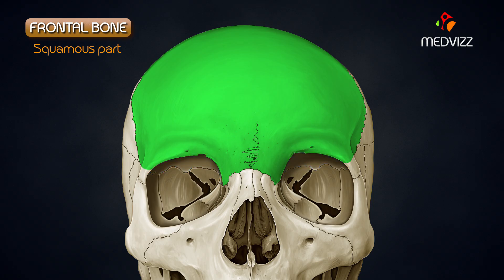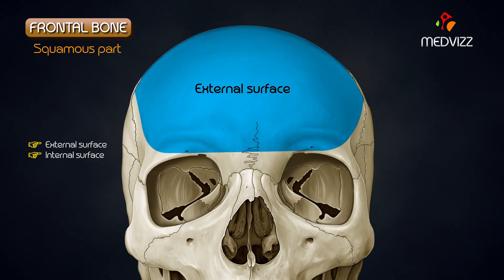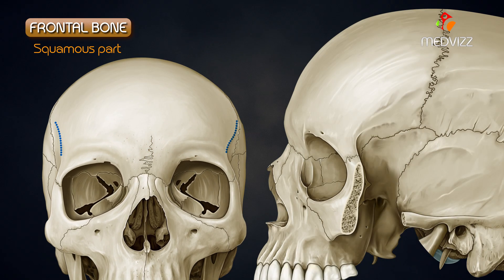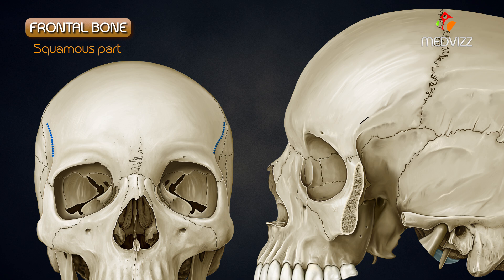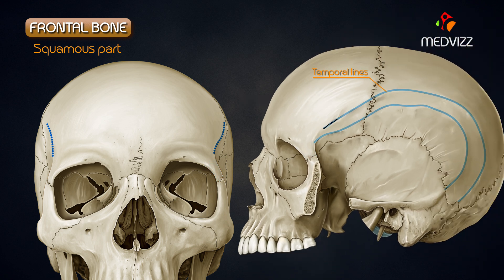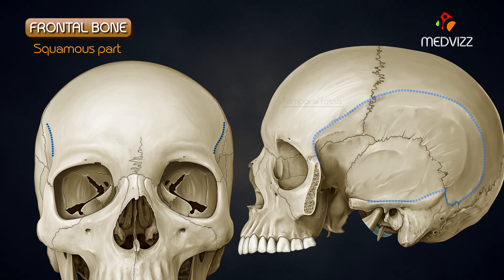The squamous part presents with external and internal surfaces. The greater part of the external surface corresponds to the forehead. This part is bounded on each side by a prominent ridge that is continuous anteriorly with the upper border of the zygomatic process and posteriorly with the temporal lines. The part of the external surface behind this ridge and below the temporal lines forms part of the floor of the temporal fossa.